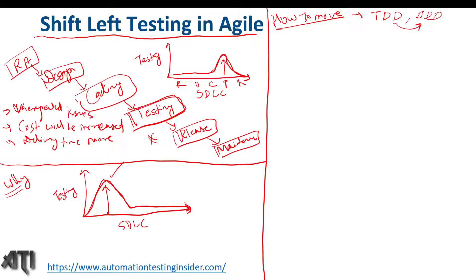Now let's talk about the different things we do when moving towards shift left testing. First, we create a test plan and test strategy document very early in the software development life cycle. A test plan is a document that defines the scope, objective, and approach of the testing, and how testing should be carried out — that is covered in the test strategy document.